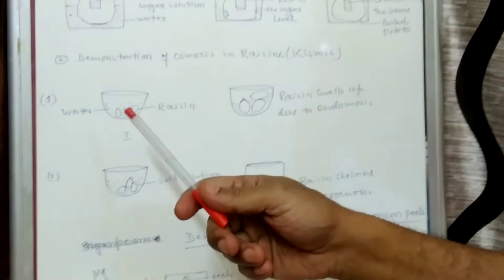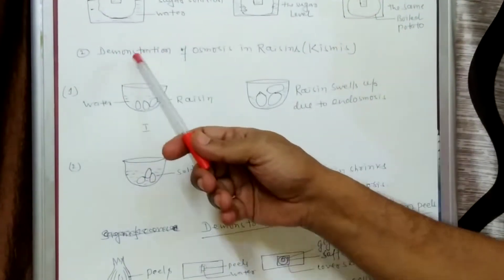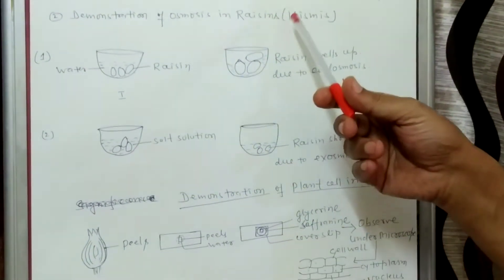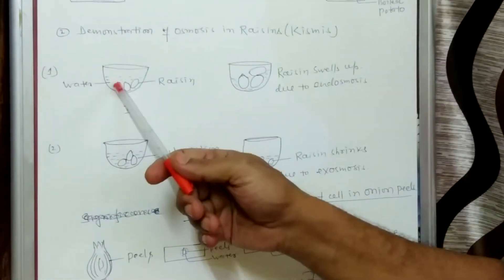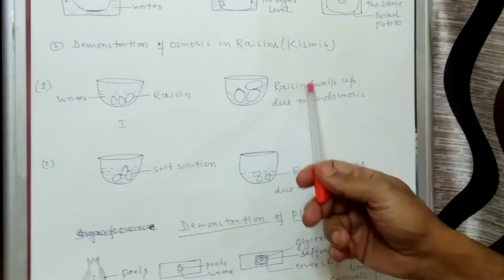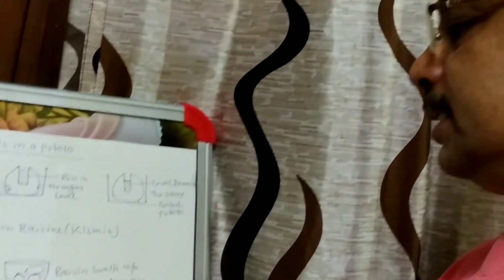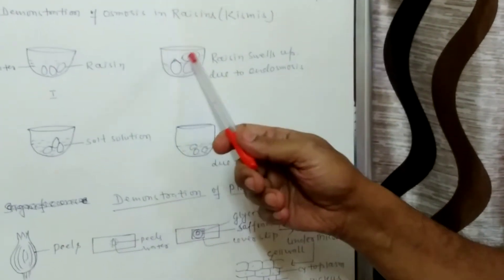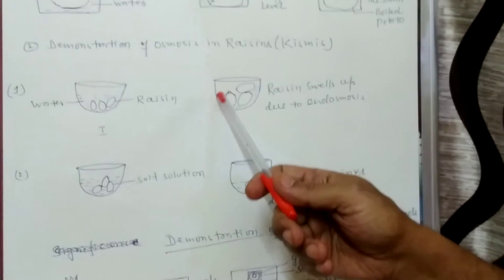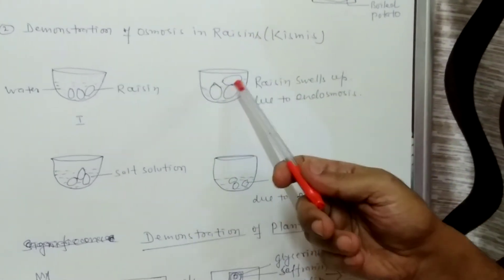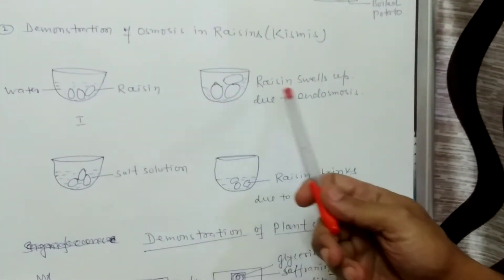Now the next experiment is the demonstration of osmosis in the raisin. You might have seen kismis in your house. When you put the kismis in a pot of water, you will find in the morning that the size of the raisin has swelled up, because the raisin has absorbed water. This process also shows endosmosis, because water is absorbed from outside to inside — water molecules move from higher concentration to lower concentration of water, that means from dilute solution to concentrated solution.